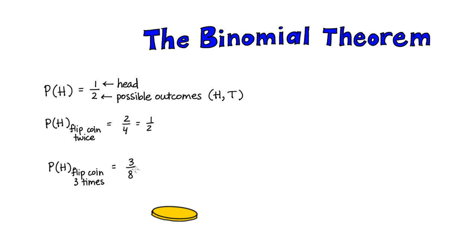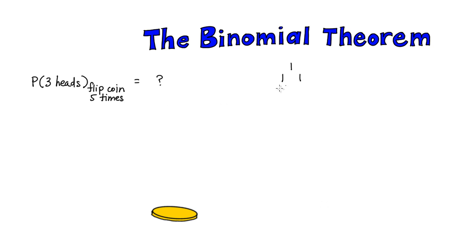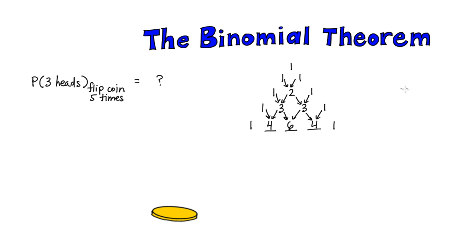This was all relatively easy. But what if I asked you: what's the probability of getting three heads if you flip the coin five times? That is a lot harder. But I'm going to show you something really cool — this is called Pascal's triangle. Can you figure out the pattern? What do you think should go in these next spaces? If you guessed four, six, and four, you're correct. We're adding the numbers next to each other to make the numbers in the next row. Remember that the probability of getting one head after flipping the coin three times was three eighths.